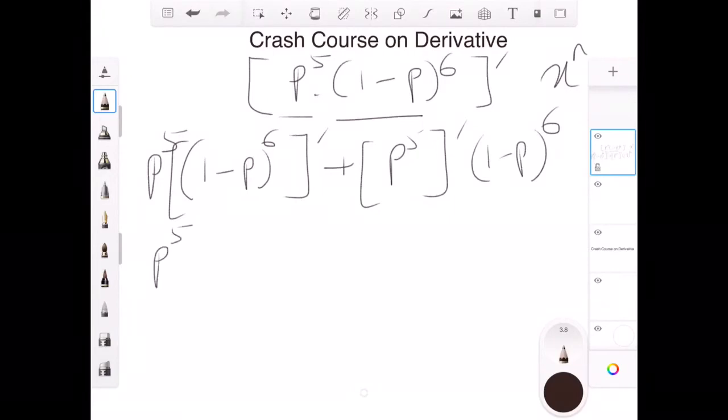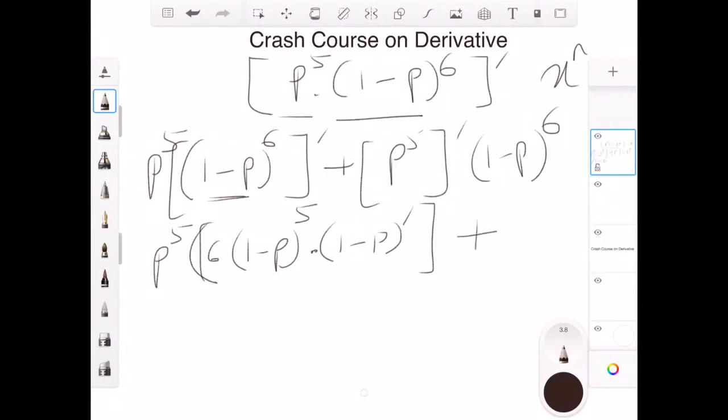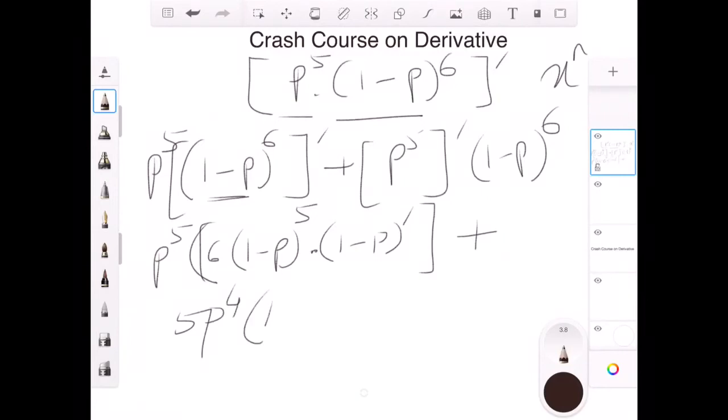I can say the derivative is the first term itself and the derivative of the second term, which is 1 minus p to the power 6, plus the derivative of the first term times the second term. P to the power 5 stays as is. Then I have 6 times 1 minus p. Consider this as a single term, take the derivative. It will behave like x to the power n, which is n of x to the power n minus 1 times, because now we're applying the product rule. I have to take the derivative of 1 minus p, plus the derivative of p to the power 5 is 5 times p to the power 4 and the second term remains as is.